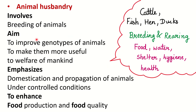Next is animal husbandry, which is also called animal breeding. It involves the breeding of animals — just as in plant breeding we breed plants, in animal husbandry we breed animals under controlled conditions. The aim of animal husbandry is to improve the genotypes of animals.